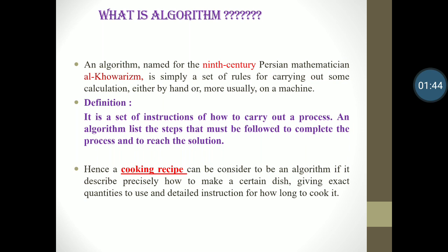It is true, but in this subject we will know about algorithm in depth. First of all, let's take a history of algorithm. An algorithm is named for the ninth century Persian mathematician Al-Khwarizmi. It is simply a set of rules for carrying out some calculation, either by hand or more usually on a machine. The perfect definition of algorithm is: an algorithm is a set of instructions of how to carry out a process. An algorithm lists the steps that must be followed to complete the process and to reach the solution.